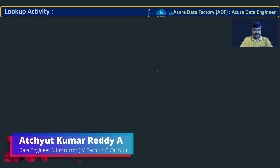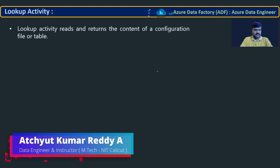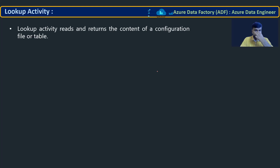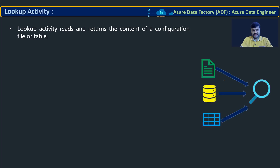Lookup activity reads and returns the content of a configuration file or table. Simply put, you can fetch data from a file or a database table using this lookup activity.